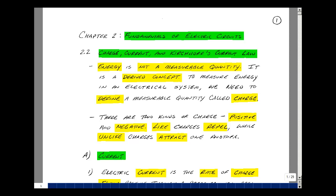Now, we're all familiar with energy, but it's actually not a measurable quantity. It's a derived concept. To measure energy in an electrical system, we need to define a measurable quantity called charge. There are two kinds of charge: positive charge and negative charge. You may recall that like charges repel, while unlike charges attract one another.